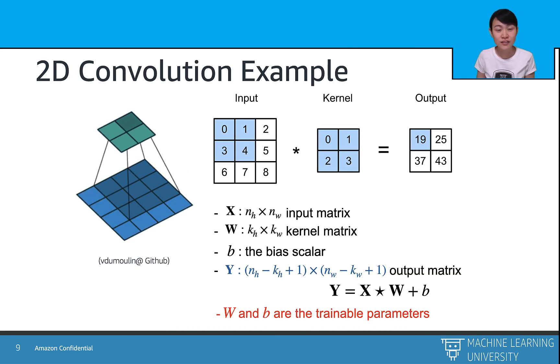If we generalize the previous examples a bit, the input X is an n by h by n by w input matrix, and the weight W is a k_h by k_w kernel matrix, and the bias b is a scalar. Then the output Y can be calculated by the input X element-wise multiply with the weight W and then plus b.